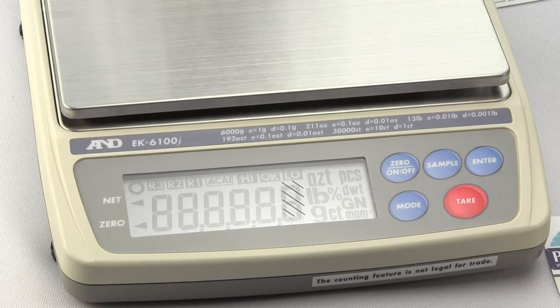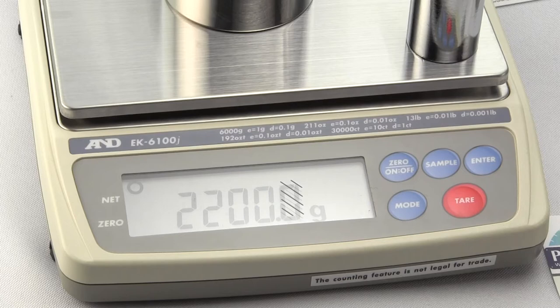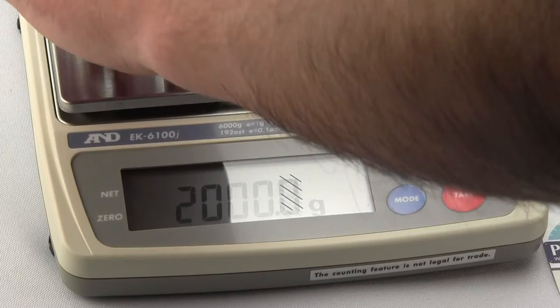Scale returns back to the weight mode. And we put our 2,000 gram weight. And you can see with the 2,000 gram weight it does very well also. So it is user selectable. And you can see when I put this weight in all the quadrants, it's very repeatable.